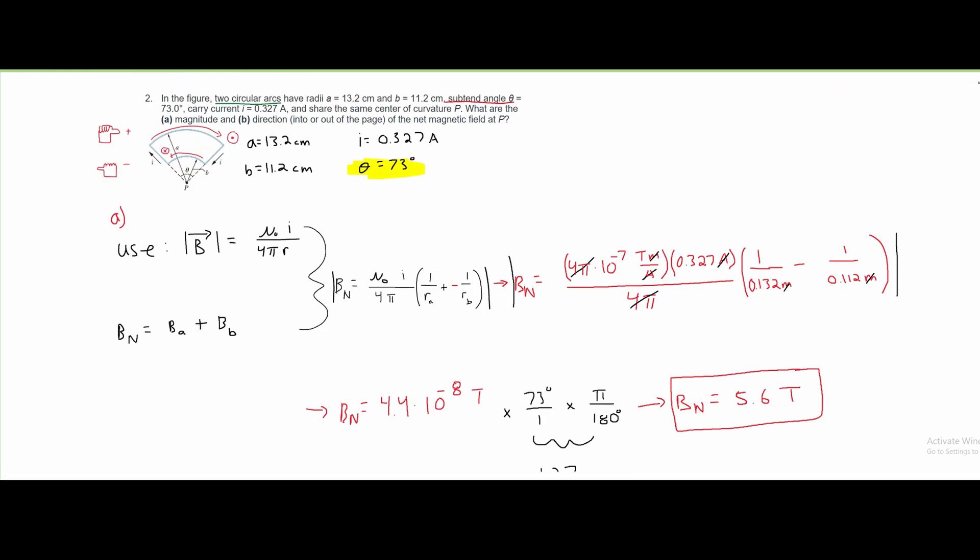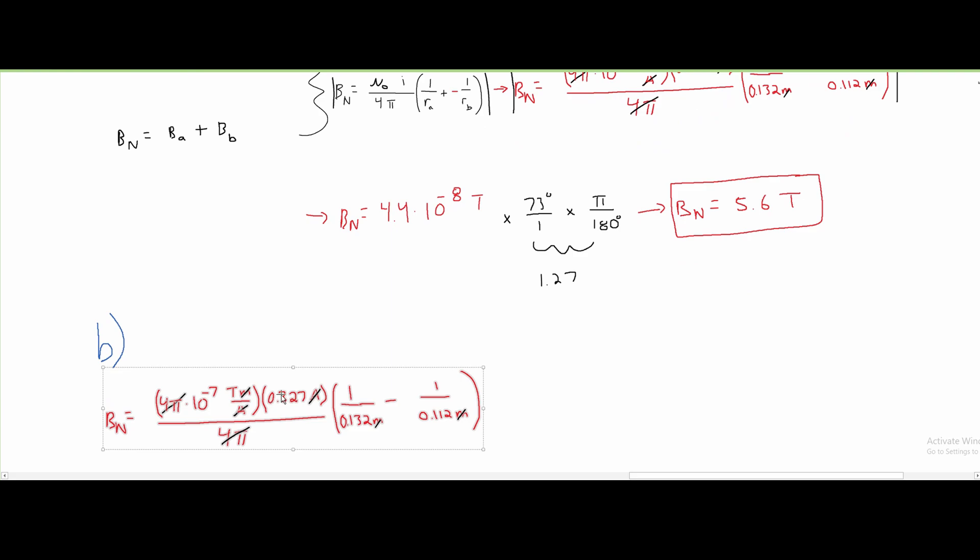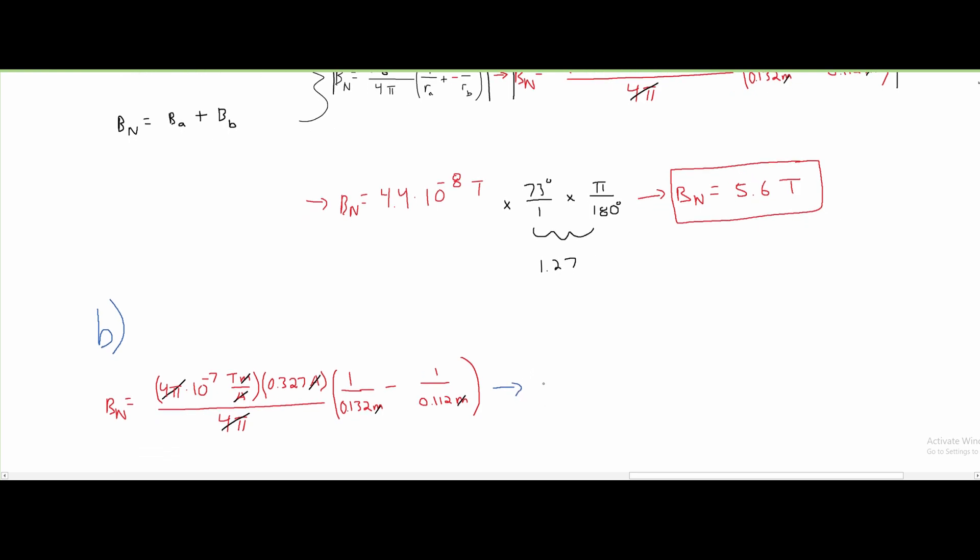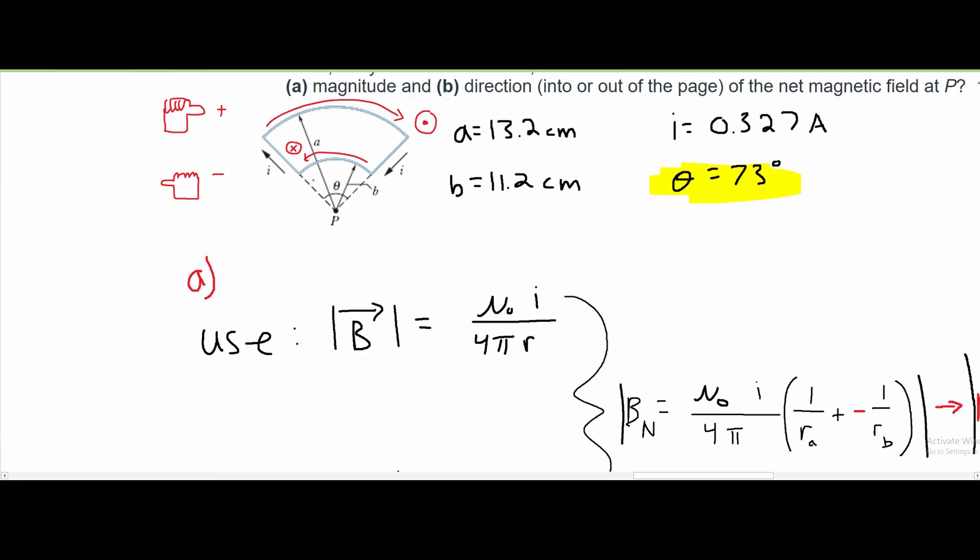For part B, we are asked the direction, in or out of the page, of the net magnetic field at P. All we need to do is take what we have here. The only difference is that after we plug this into our calculator, we are not going to take the absolute value, and that gives us negative 4.4 times 10^-8 Teslas. Since this is negative, this tells us our direction.